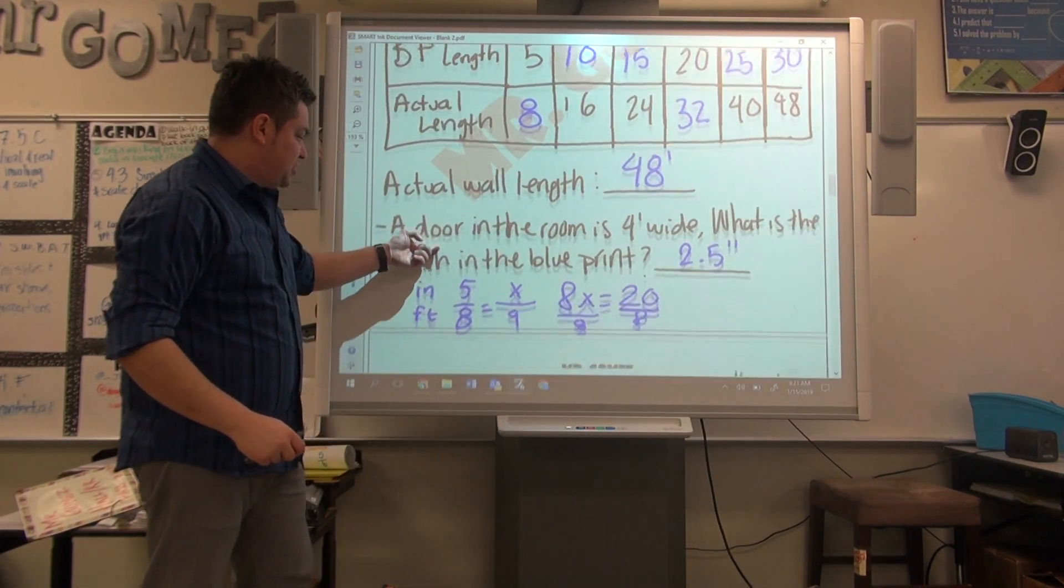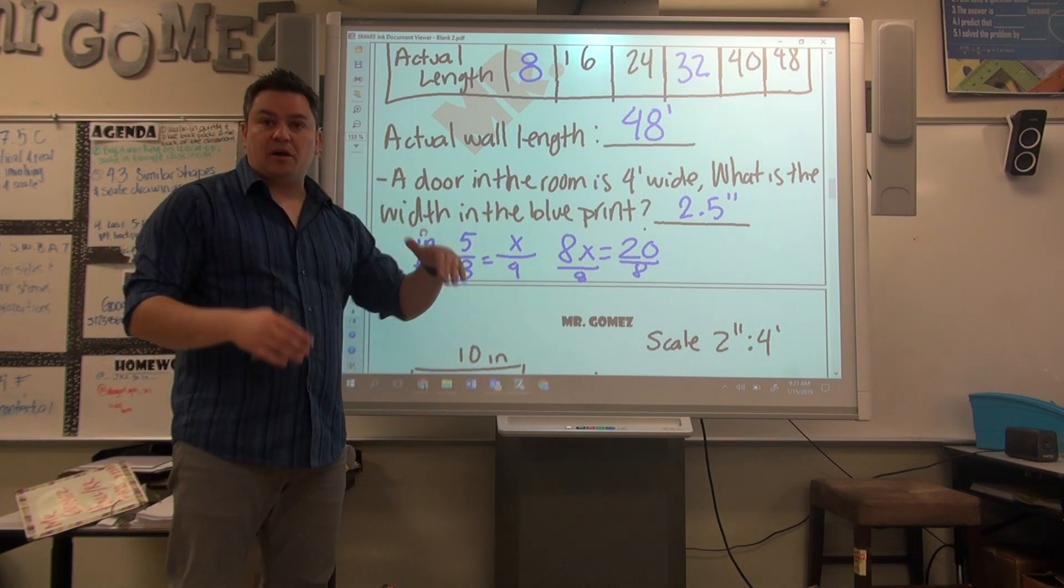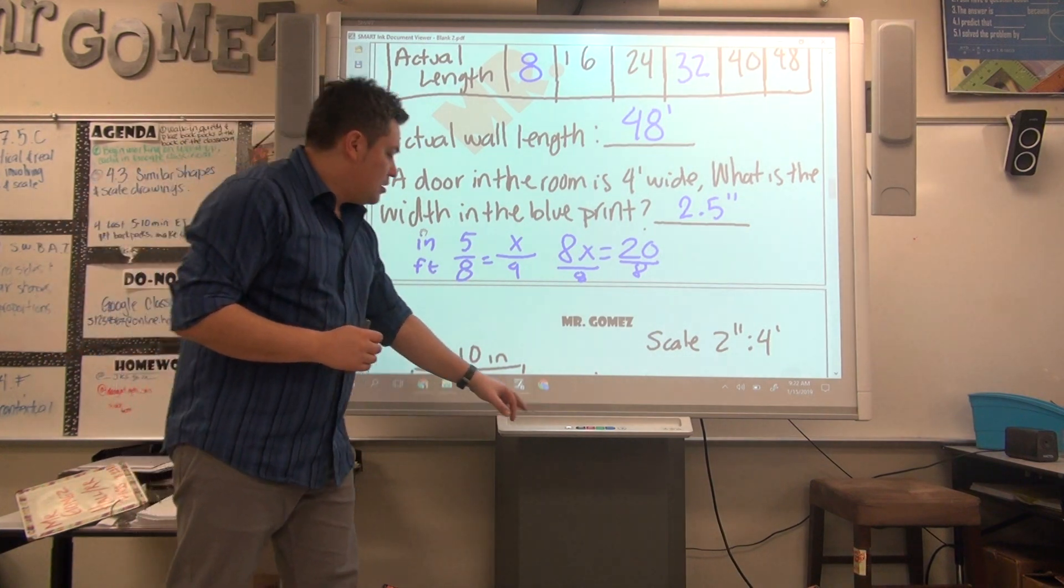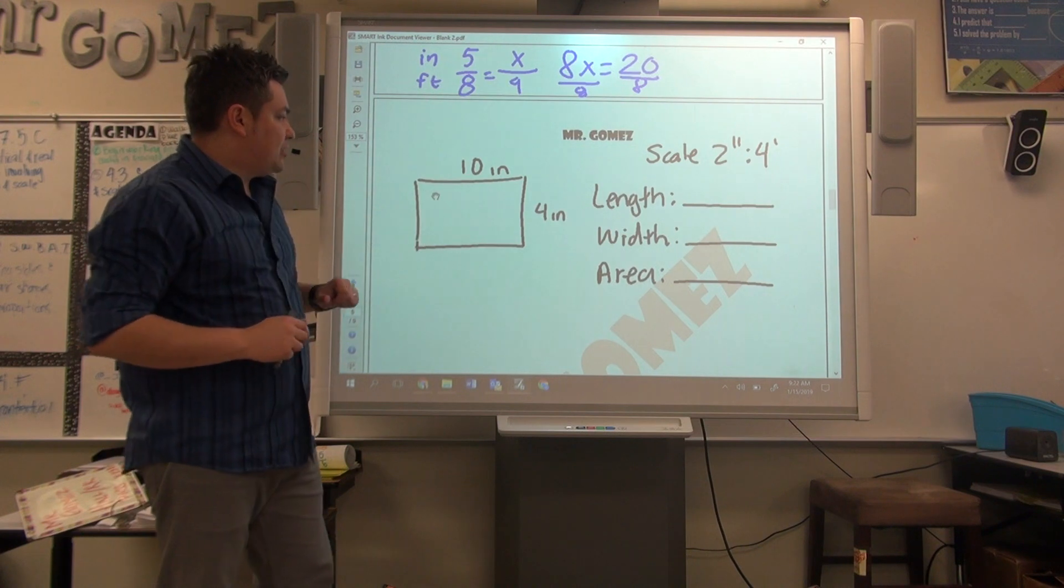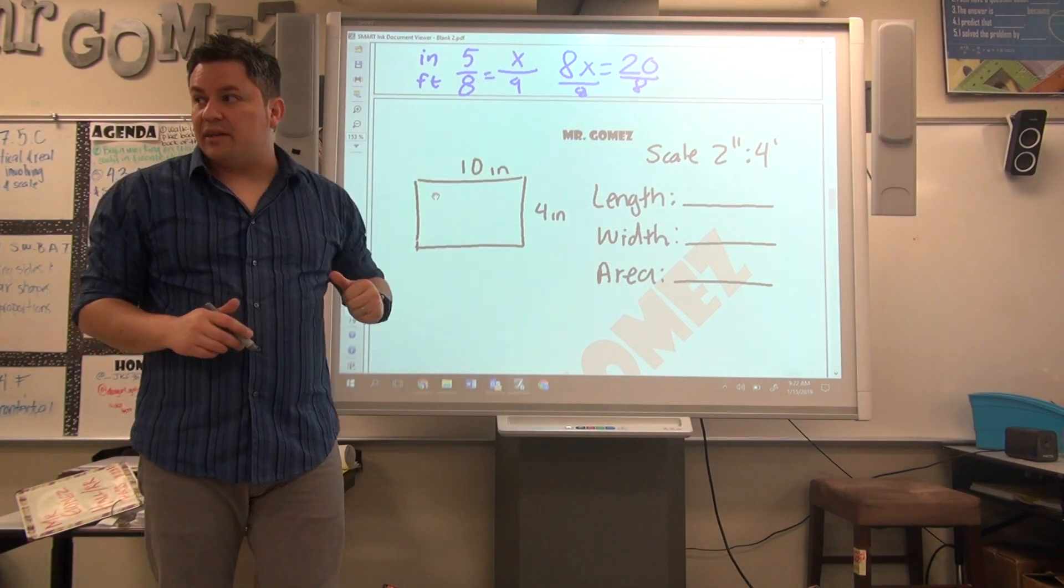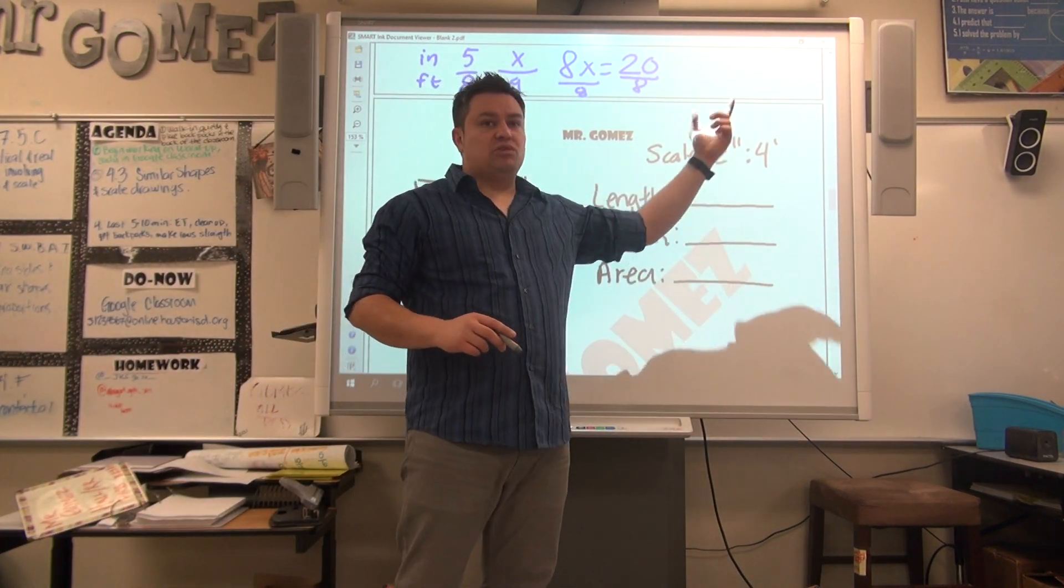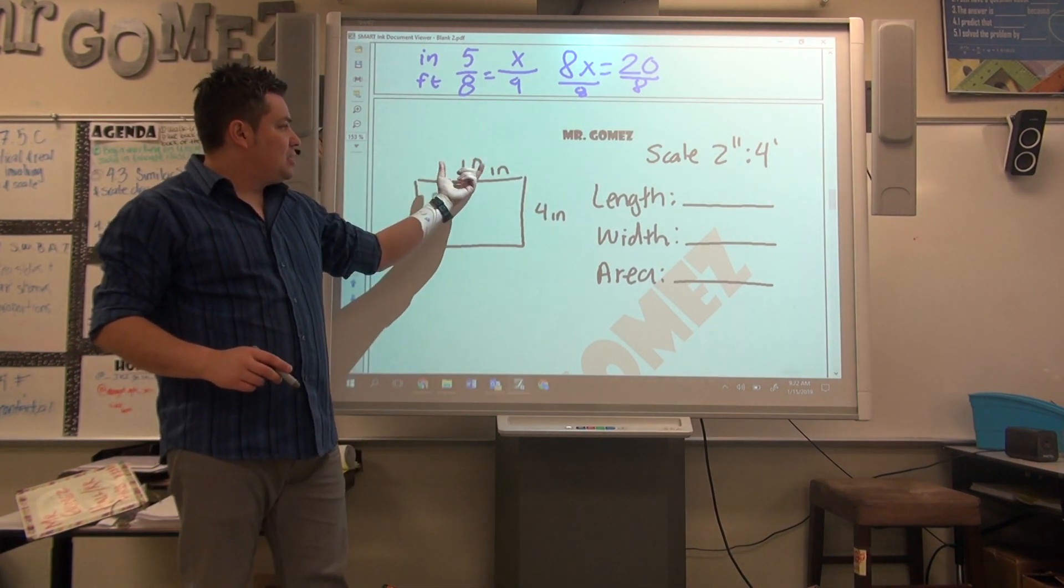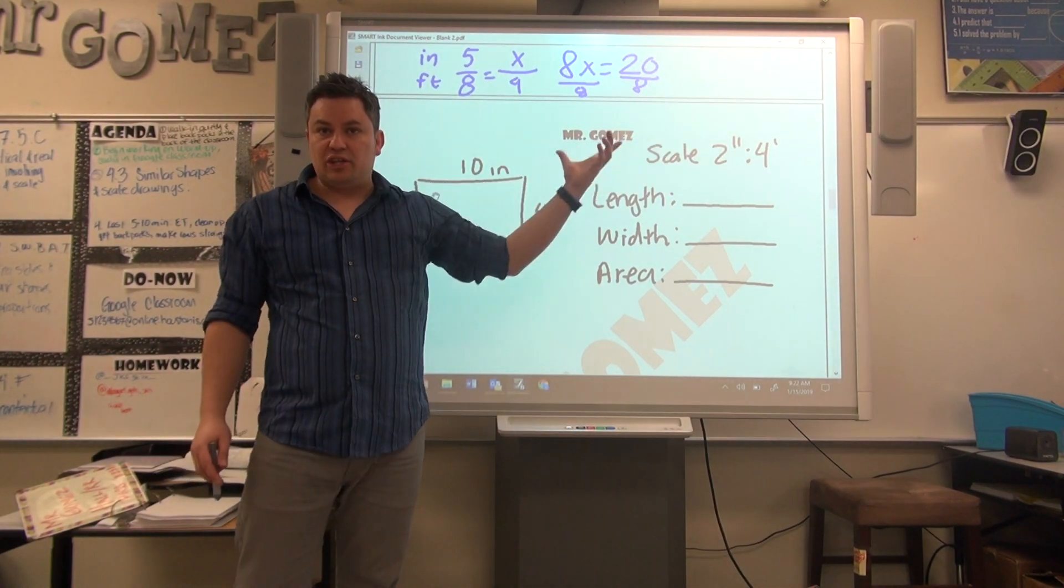Again, you set up your proportions and put the inches on top, feet on the bottom. Make sure you're consistent. Now, another thing is drawings. So you have a rectangle, 10 inches long by 4 inches wide. The scale factor is 2 inches equals 4 feet. So you're going to divide by 2 and then multiply by 4 to get the new width.